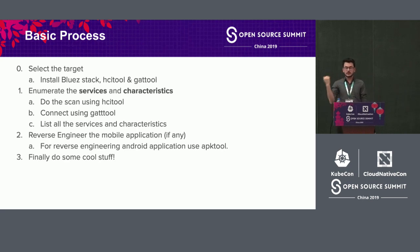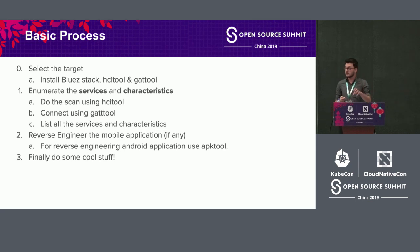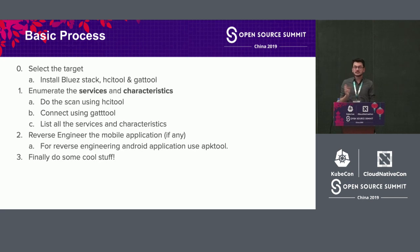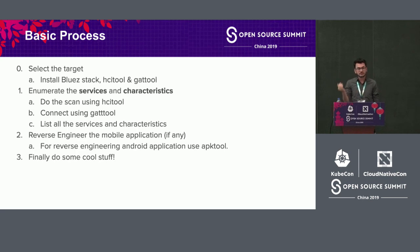Step one is enumerating services and characteristics. Once you have all the information about the device, you want to figure out how many services and characteristics are running and what each one does. You can use Adsetool to scan nearby devices, then connect using Gatool, and list all services and characteristics. Most of the time characteristics are listed as unknown — you can just do a Google search to figure out what each characteristic does.